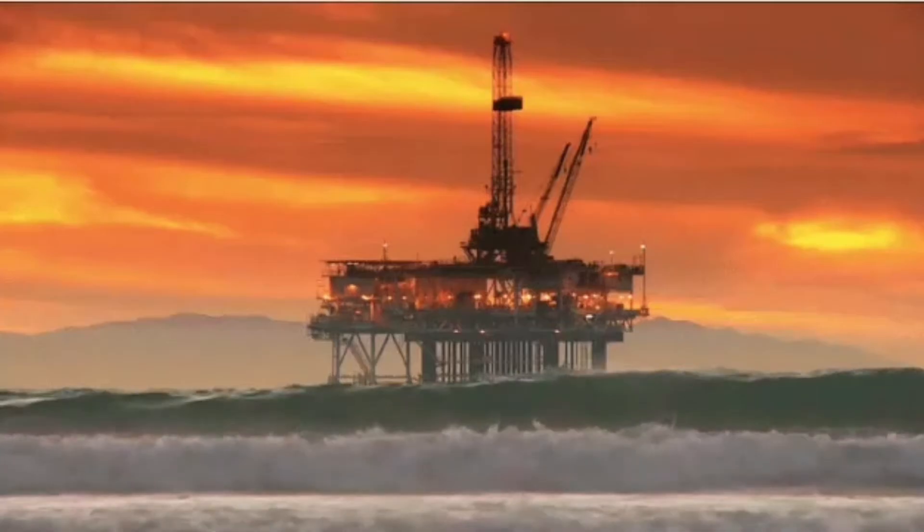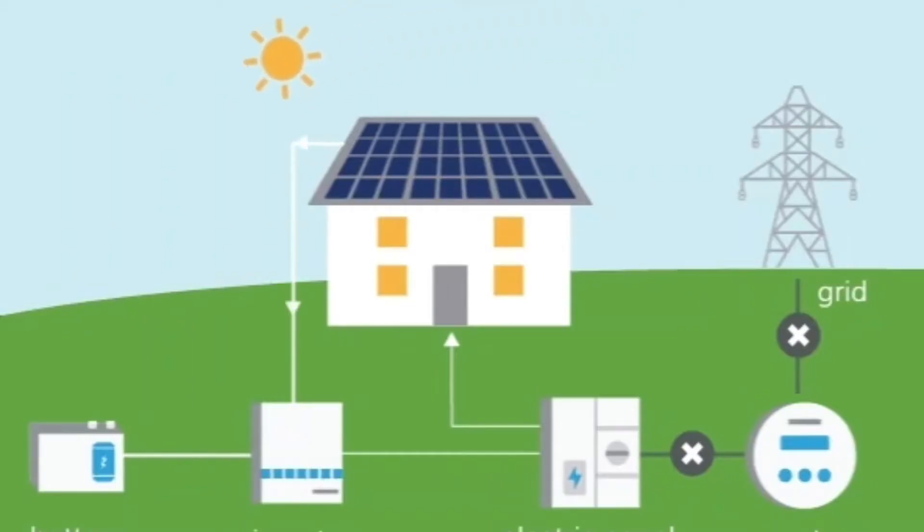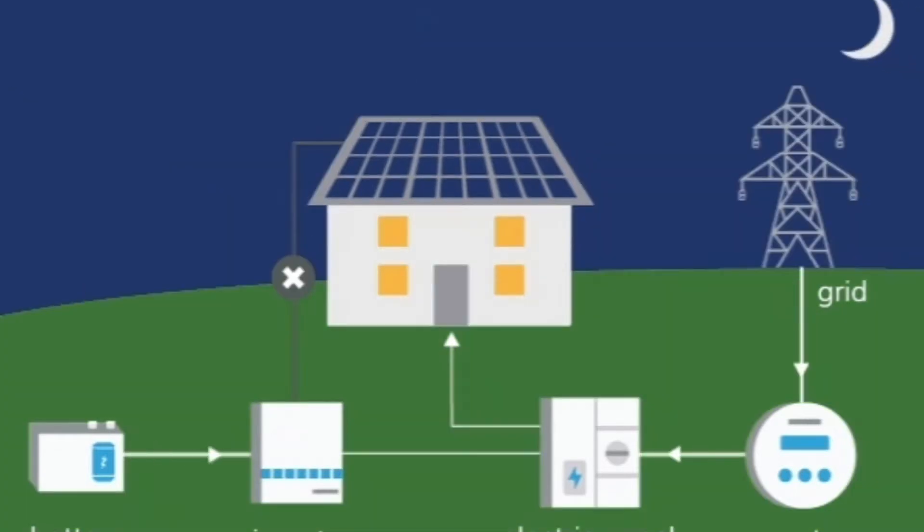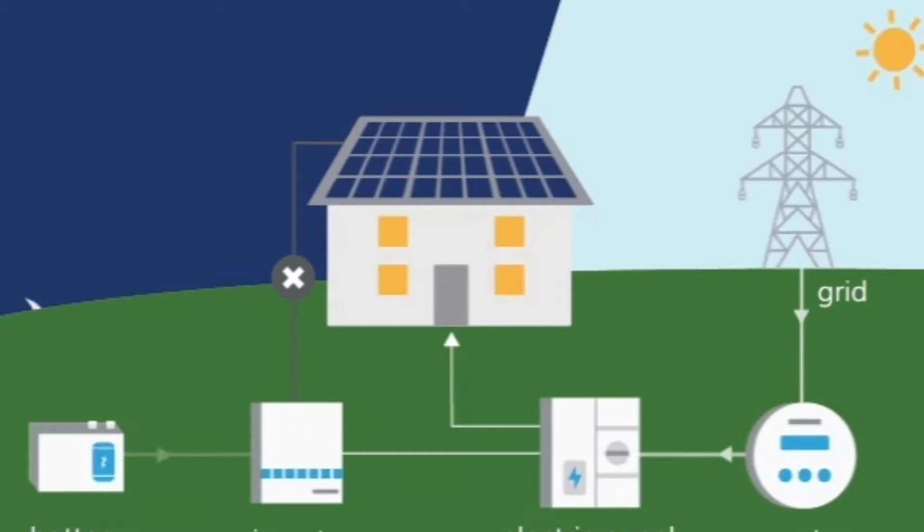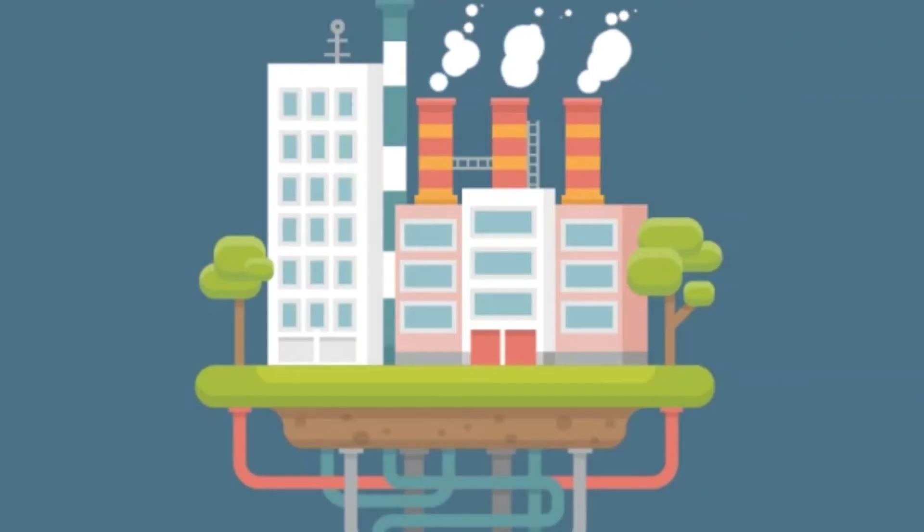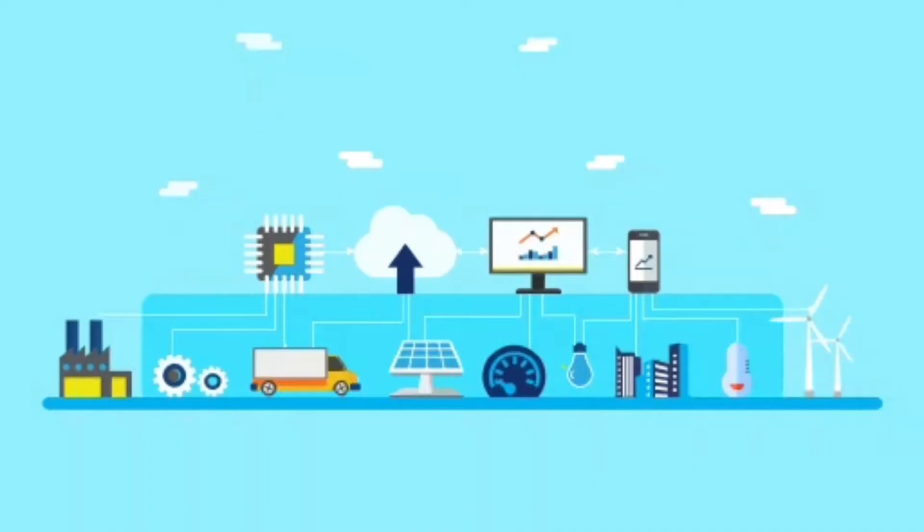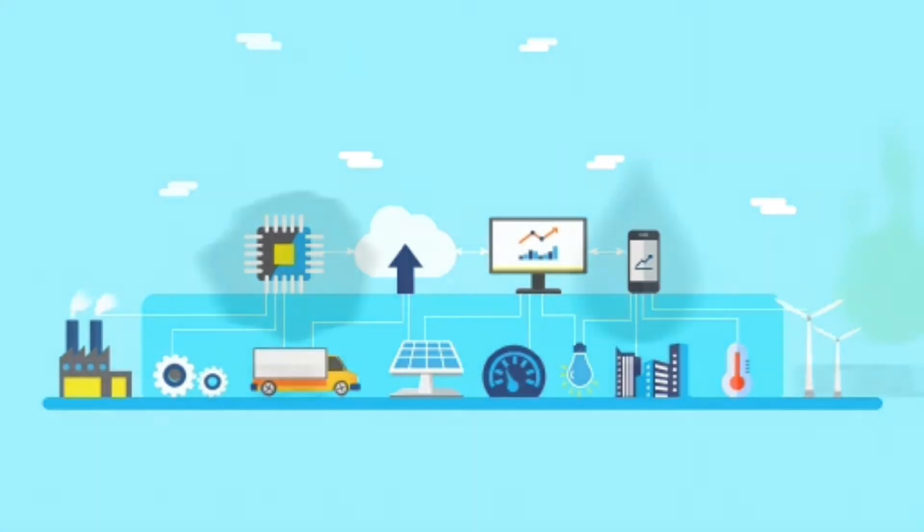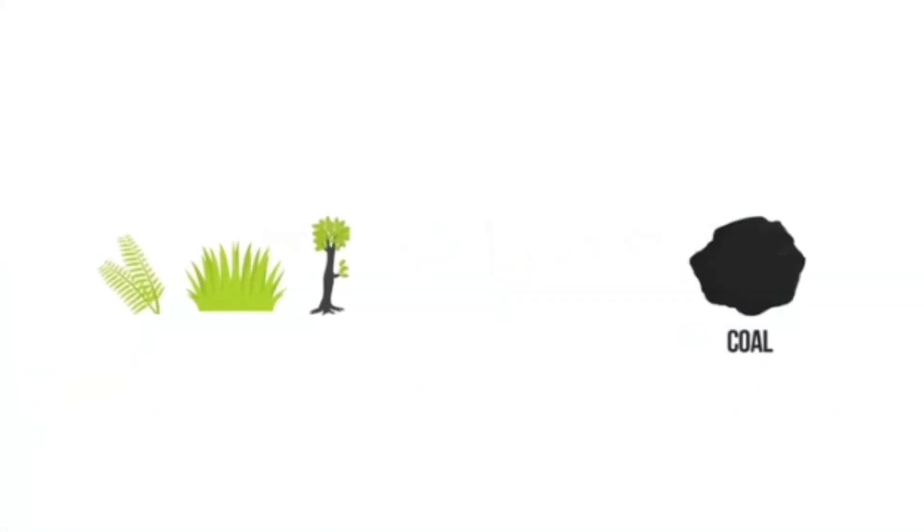At the present rate of consumption, coal will last for about 200 years and the petroleum reserves on earth will last for only just 40 years. Once these get exhausted, they will not be available for us in the near future because their formation is very slow and cannot be replenished in the near future.